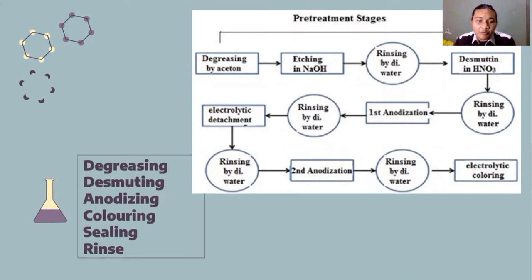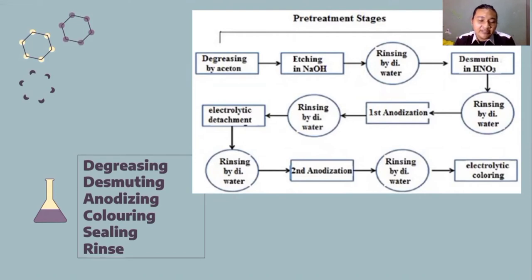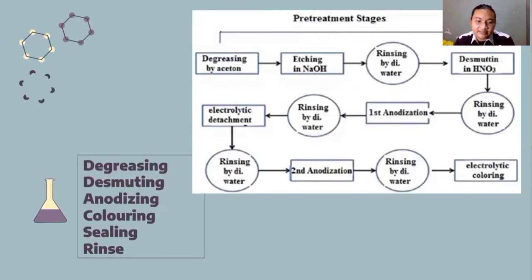The treatment stages have six steps: number one is degreasing, number two is smoothing, next is anodizing, next is coloring, five is sealing, and the last is rinsing.